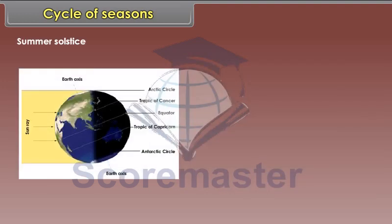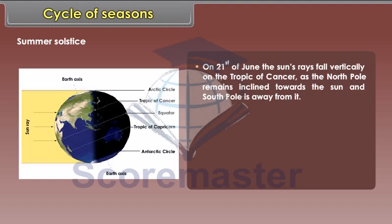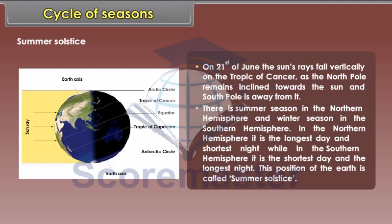On 21st June, the sun's rays fall vertically on the Tropic of Cancer as the North Pole remains inclined towards the sun and the South Pole is away from it. There is summer season in the Northern Hemisphere and winter season in the Southern Hemisphere. In the Northern Hemisphere, it is the longest day and shortest night, while in the Southern Hemisphere, it is the shortest day and the longest night. This position of the earth is called Summer Solstice.